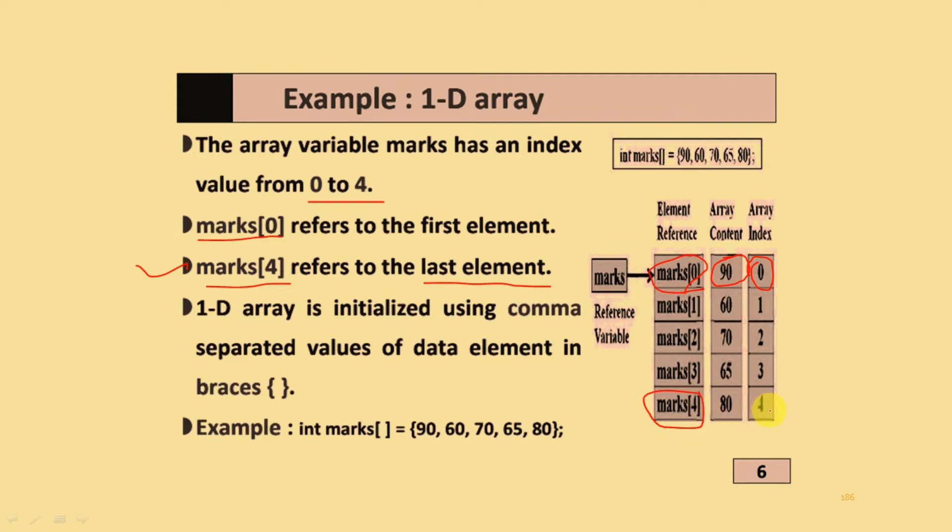marks[4] refers to the last element, with array index 4 and array content stores value 80. One dimension array is initialized using comma separated values of data elements in curly brackets. Example: int marks[] = {90, 60, 70, 65, 80}. This is the example of one dimension array.